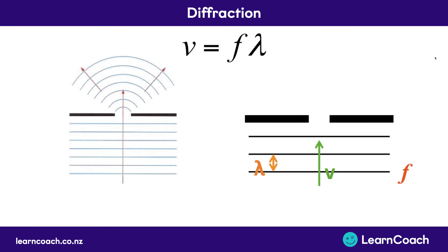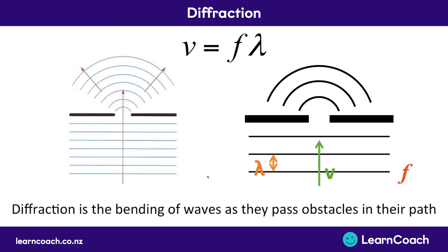Now on to how that relates to diffraction. Diffraction is when we have a wave coming towards some kind of gap or barrier and it passes through that gap — the waves actually spread out. Diffraction by definition is the bending of waves as they pass obstacles in their path. In each of these pictures you can see the waves moving towards a gap, with obstacles on either side, and they're bending around each obstacle and throughout the gap.